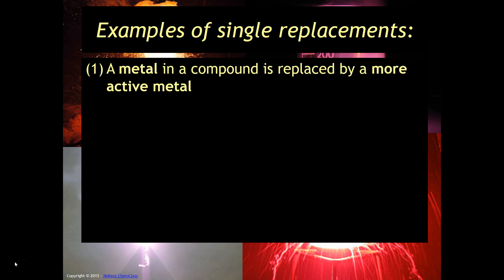Here are some examples. If you have a metal in a compound that is replaced by a more active metal, for example, lithium plus zinc acetate. You have to first identify what's replacing what here. Well, lithium is a metal. It only has the capacity to replace the other metal. That's why I kept saying like replaces like. So since zinc is the other metal, I'm going to have to check to see, can this reaction occur? And the way I will do that is by using the activity series.